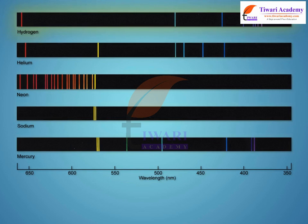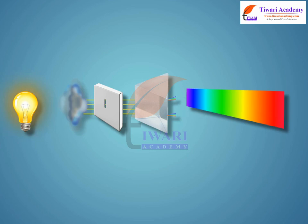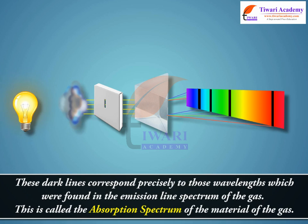The spectrum emitted by atomic hydrogen, helium, neon, sodium, and mercury are shown in the figure. On passing white light through a gas, we find some dark lines in the spectrum of the transmitted light. These dark lines correspond precisely to those wavelengths which were found in the emission line spectrum of the gas. This is called the absorption spectrum of the material of the gas.